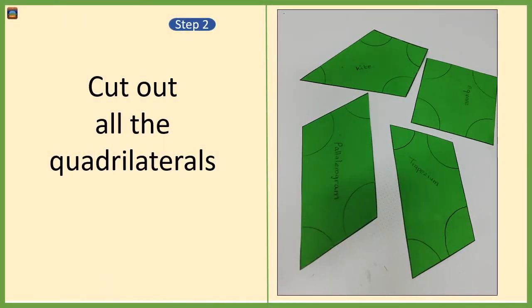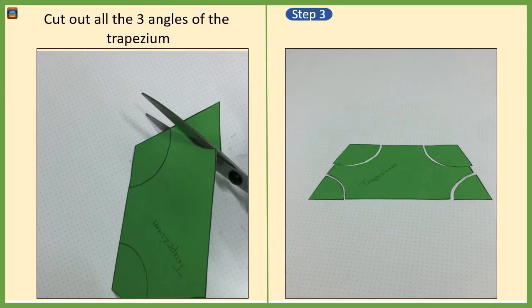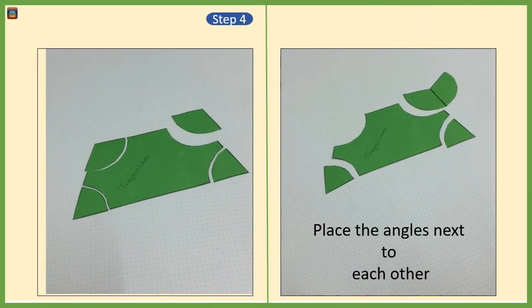Step number two: cut out the quadrilaterals from the colored paper. We have here a trapezium, we have a kite, a parallelogram, and a square. Now cut out all the marked angles from the corners of the trapezium.